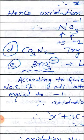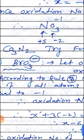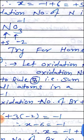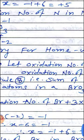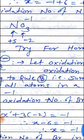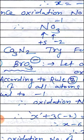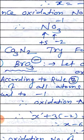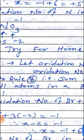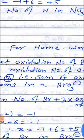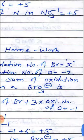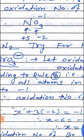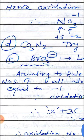Next, D: Ca₃N₂ — this example you have to try as homework. You have to solve this.